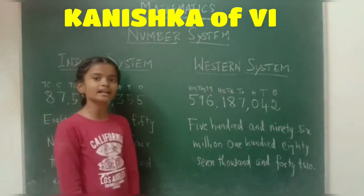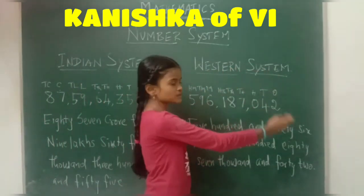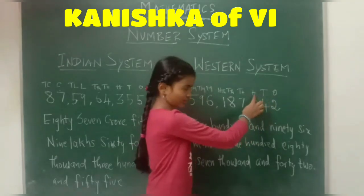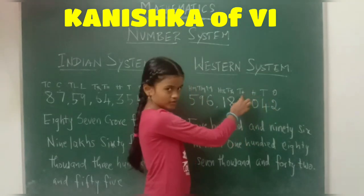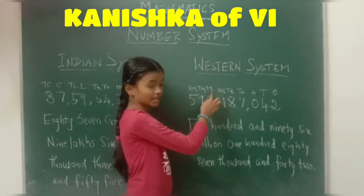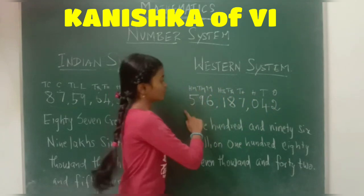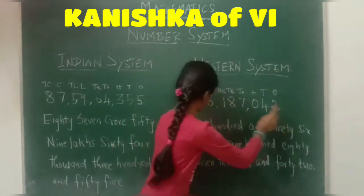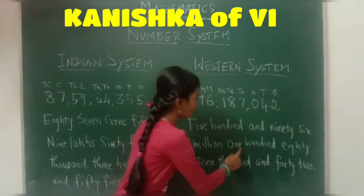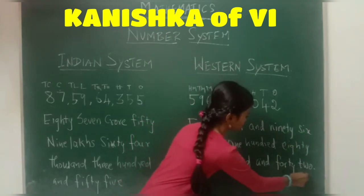Now, we shall see another number in Western system. The place values are ones, tens, hundreds, thousand, ten thousand, hundred thousand, million, ten million and hundred million. The number is five hundred and ninety-six million, one hundred eighty-seven thousand and forty-two.